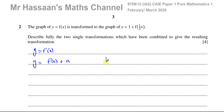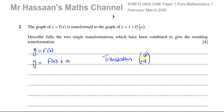So you can say this is a translation, and you can give a vector to describe the translation. It doesn't move horizontally, but it moves vertically a units upwards — positive a. So that's a vertical translation.